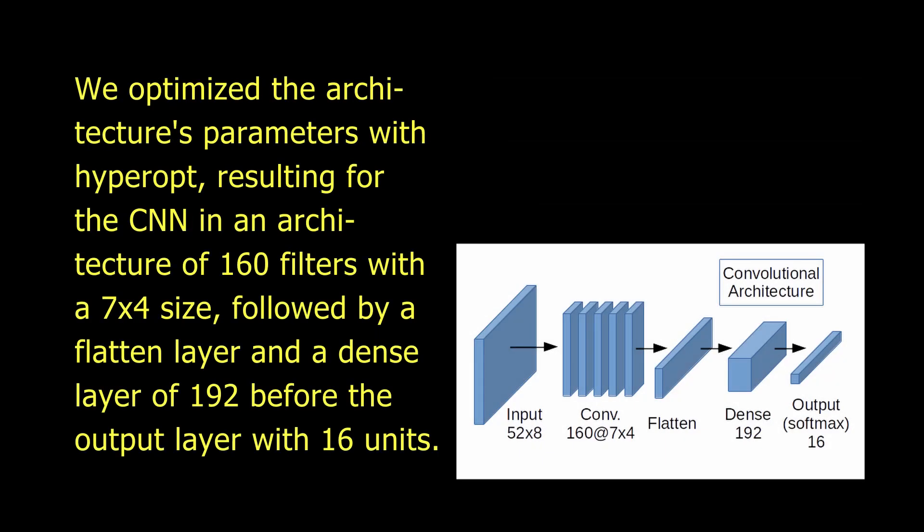We optimized the architecture's parameters with Hyperopt, resulting for the CNN in an architecture of 160 filters with a 7x4 size, followed by a flatten layer and a dense layer of 192 before the output layer with 16 units.